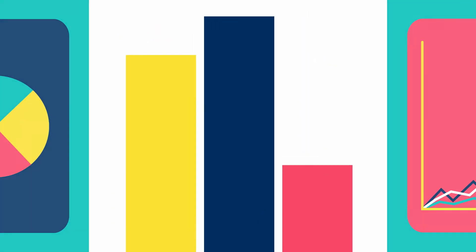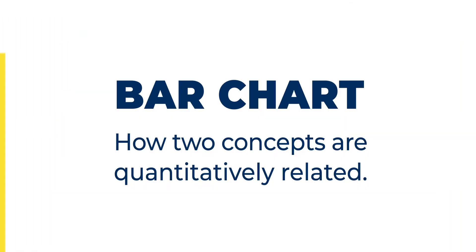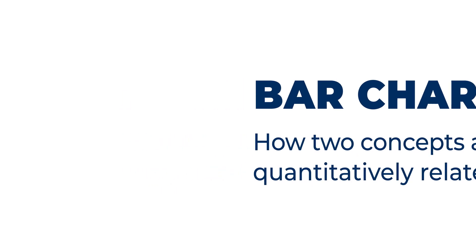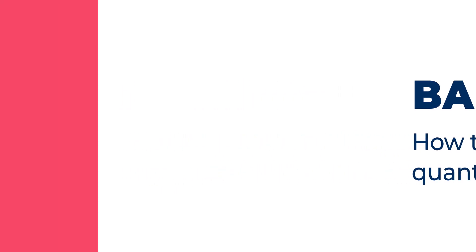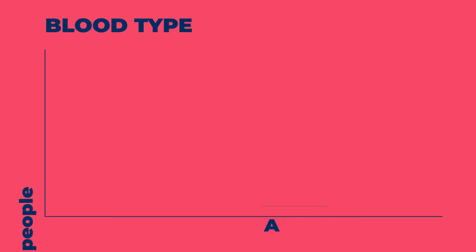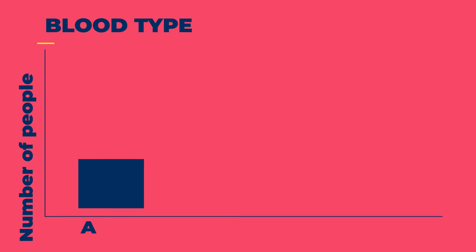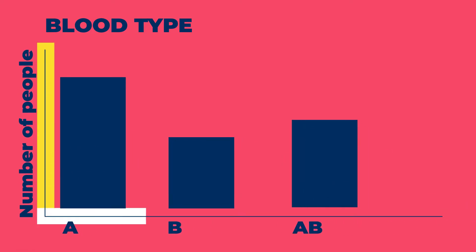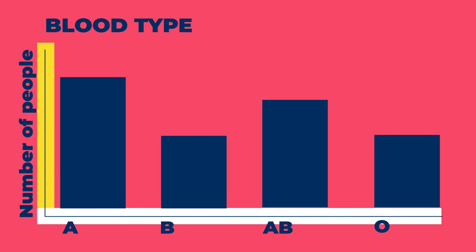A bar chart is designed to share quickly how two concepts are quantitatively related. For example, a scientist wanting to show how many people in a region have a particular blood type might use a bar chart, with number of people as the y-axis units and the blood types across the x-axis.